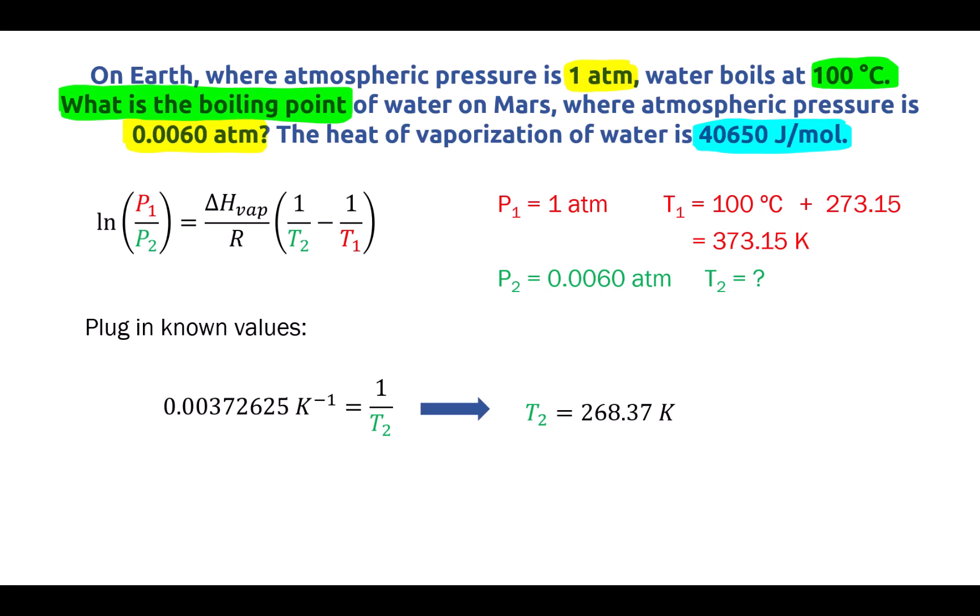Sometimes they will want the number in Celsius because that's what we're more used to using as humans. So if we want the number in Celsius, we'll just have to subtract 273.15 from our number and that will give us negative 4.78 degrees Celsius. That is an example of how to use the Clausius-Clapeyron equation to solve for one of our unknown values. Tune into the subsequent video to see another example solving for a different variable.